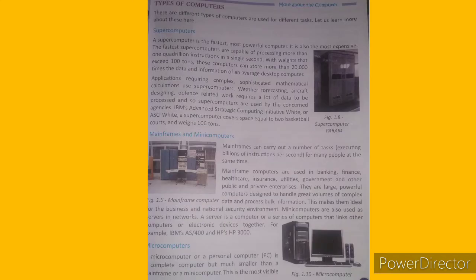Knowing software: the words software, codes, and programs are often used interchangeably. They refer to the instruction sequences that run the hardware of a computer. Software is divided into two general areas: operating systems and application programs. An operating system is a program that controls the working of the computer. Examples are MS Windows, Linux, and Mac. Application software programs fulfill the needs of the computer user. Examples are Microsoft Office, Photoshop, and Flash.